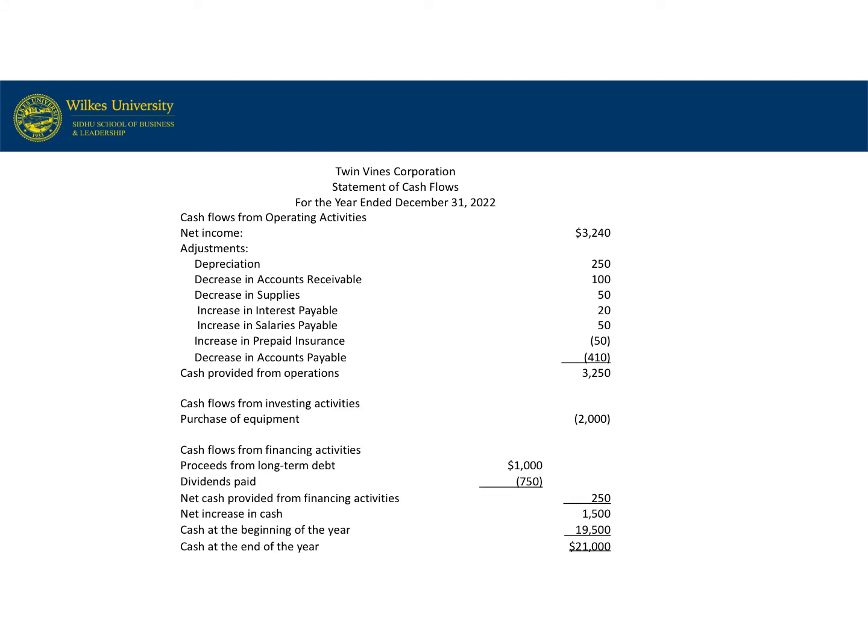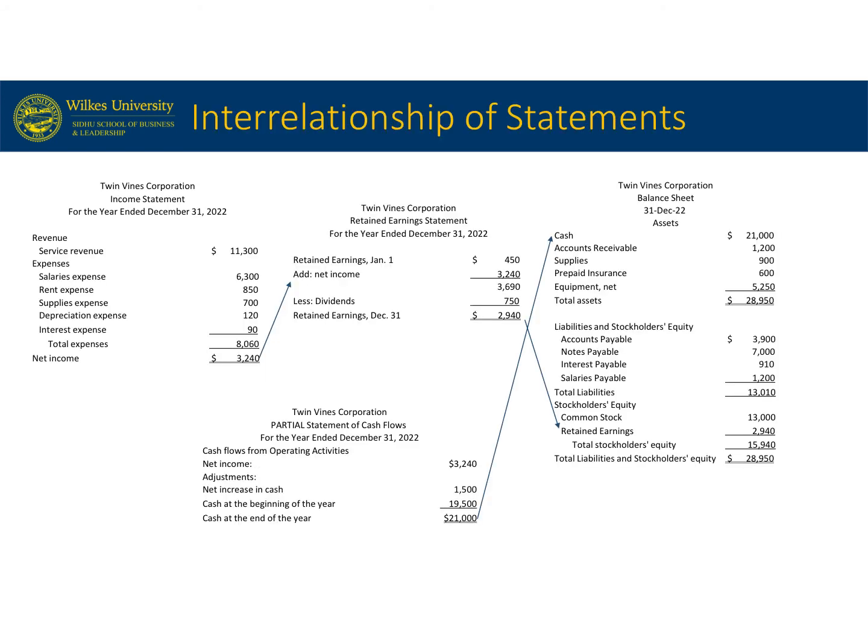Now for the statement of cash flows. It covers how cash was received and used for the year, so the date reflects a time period. Notice the activities of operating, investing, and financing are used. The statement shows where cash came from and how it was used. If there's more cash in than out, it's called cash provided; if there's more cash out, it's cash flows used. The beginning and ending cash balances are shown, and the ending cash balance will be the same amount on the balance sheet at year end. Notice how the statements tie together: net income carries from the income statement to the retained earnings statement, the ending retained earnings balance carries to the balance sheet, and the ending cash from the cash flow statement matches the balance sheet.